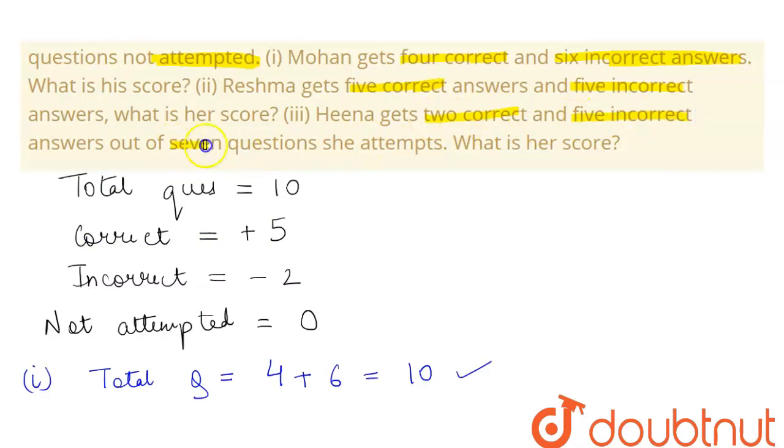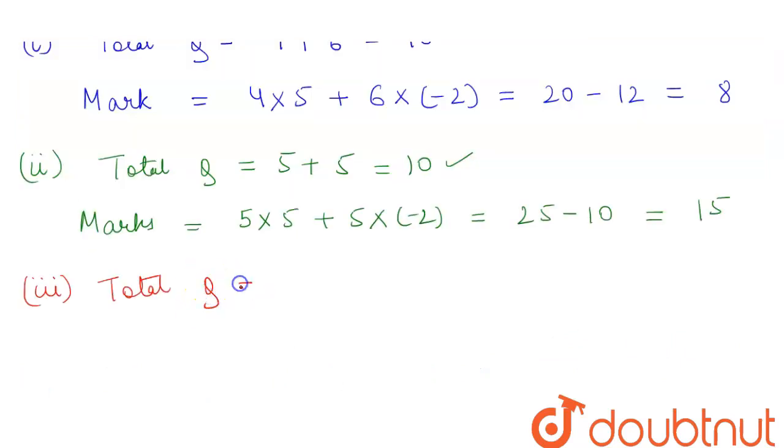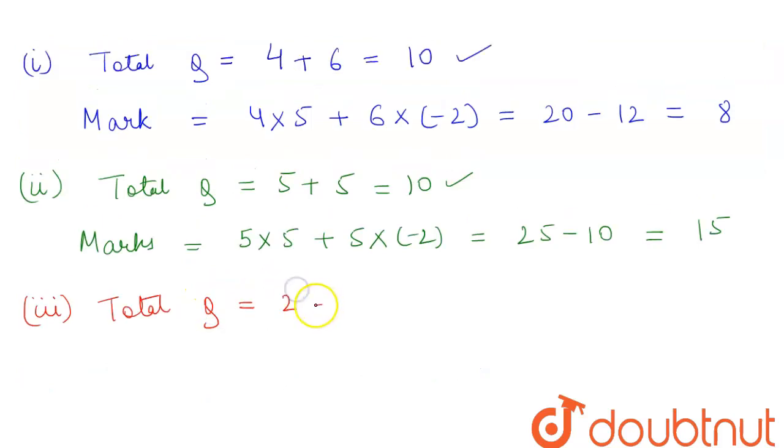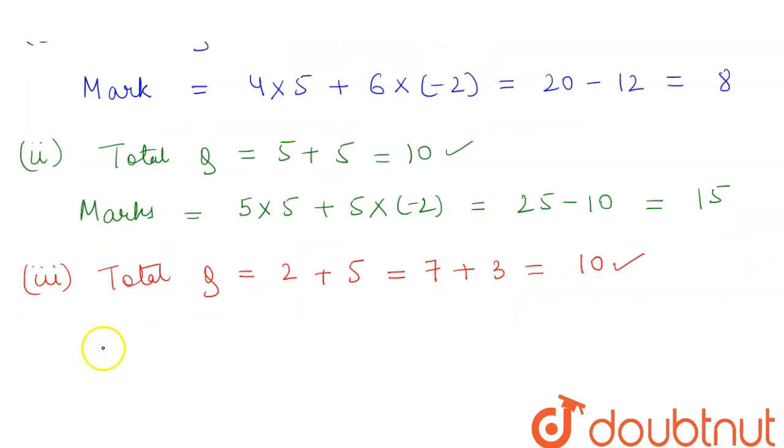Now the third part is given that Heena gets 2 correct and 5 incorrect out of the 7 questions she attempted. So the total questions come out to be - they say she gets 2 correct and 5 incorrect, which makes the total count to be 7. So it means that there are 3 questions that she did not attempt; then only we will get our total to be 10.